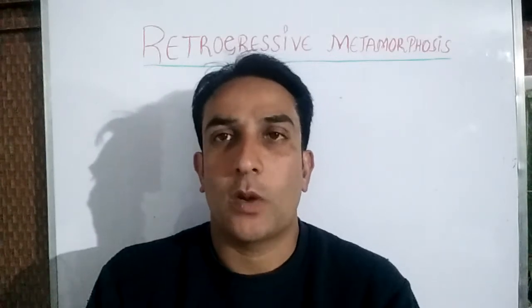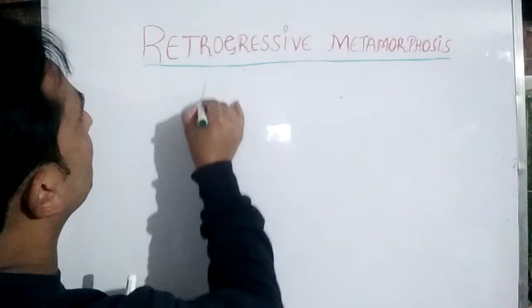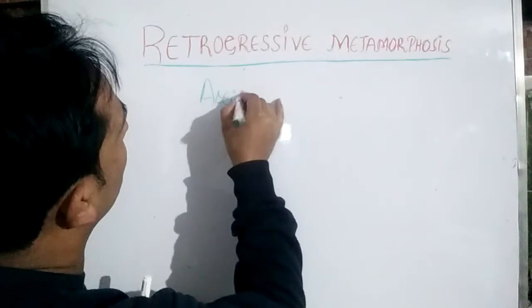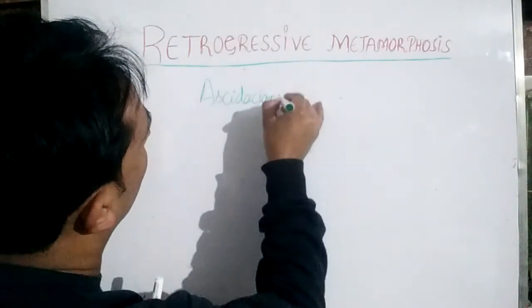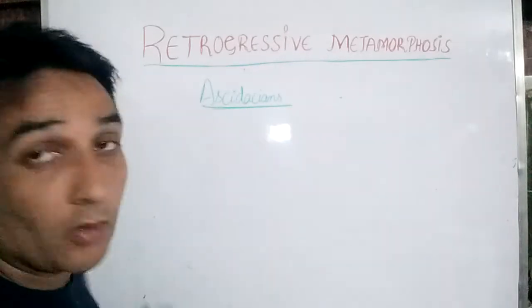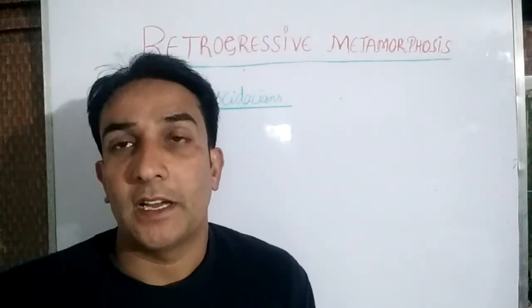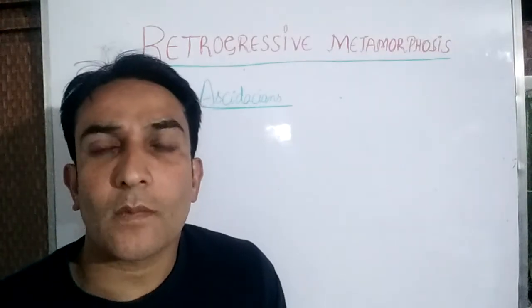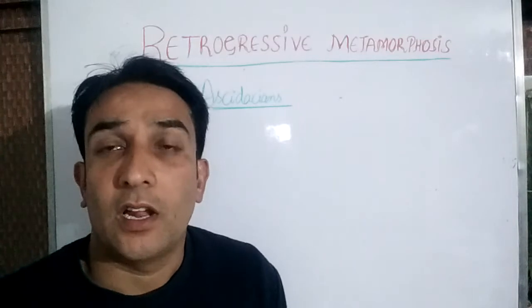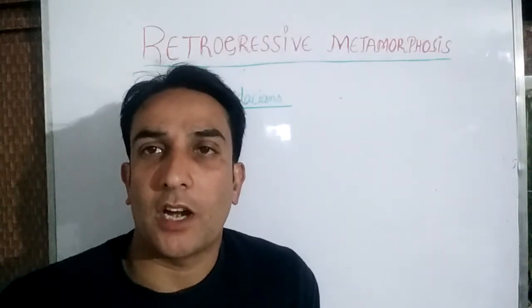We will now discuss what Retrogressive Metamorphosis is. We see Retrogressive Metamorphosis in the Ascidaceans. Ascidaceans are included among the chordates depending upon the fact that the larva of the Ascidaceans shows chordate characters.